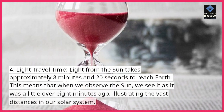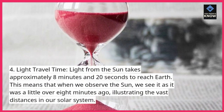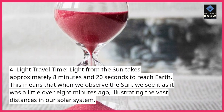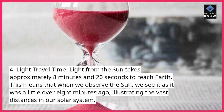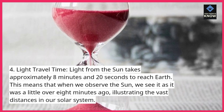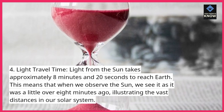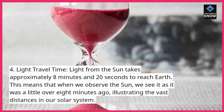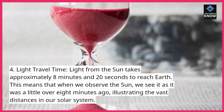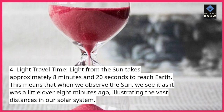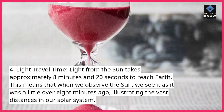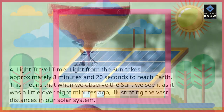Light travel time: light from the sun takes approximately 8 minutes and 20 seconds to reach Earth. This means that when we observe the sun, we see it as it was a little over 8 minutes ago, illustrating the vast distances in our solar system.